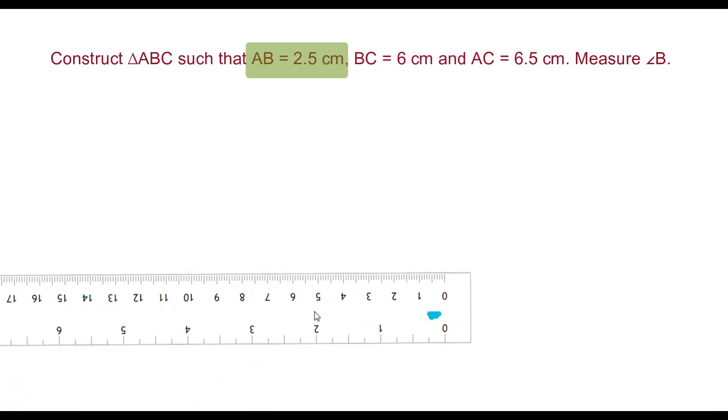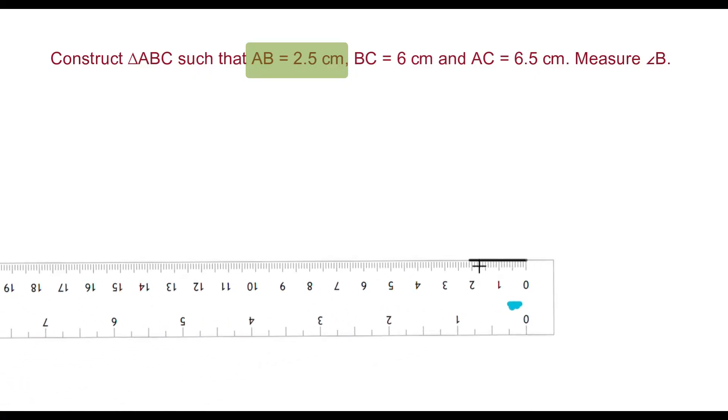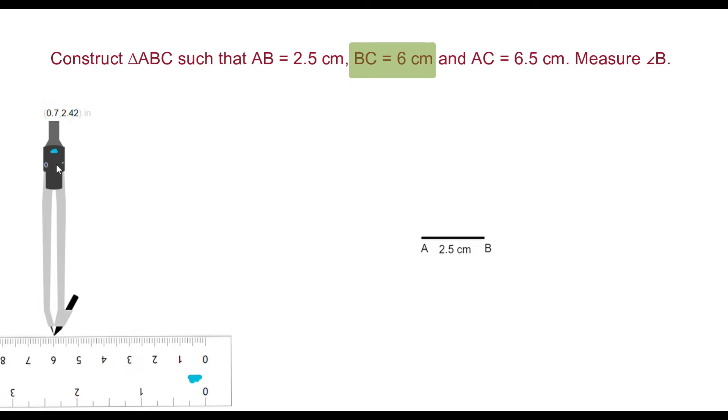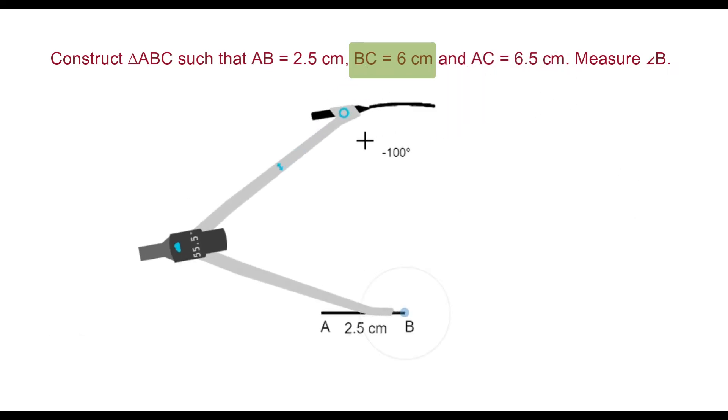First we will draw the line segment AB. Adjust compass up to length of 6 cm. Place pointed tip of compass at B and draw an arc.